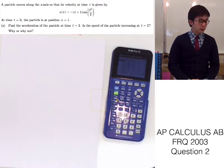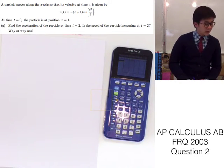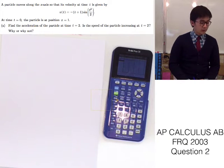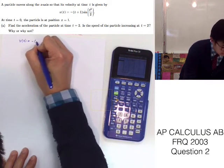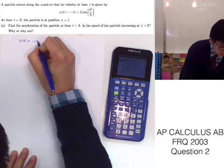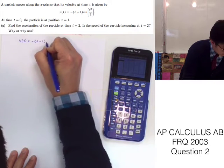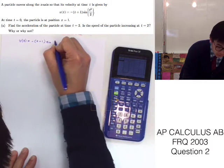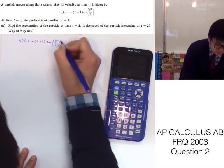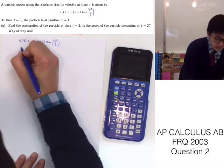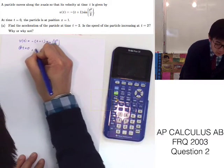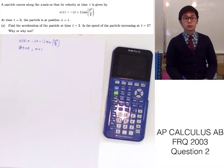Today we're going to be answering question number 2 from the 2003 AP Calculus FRQ. In this particular FRQ we are given the velocity of a particle moving along the x-axis: v(t) equals negative t plus one, times sine of t-squared over two. We are also given that at t equals zero, the particle is at x equal to one.